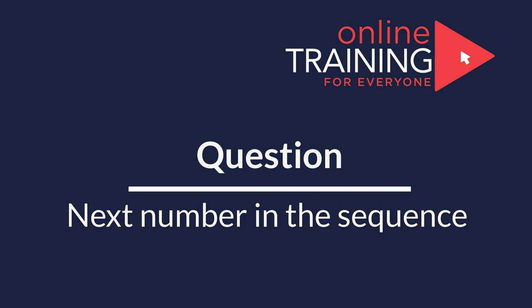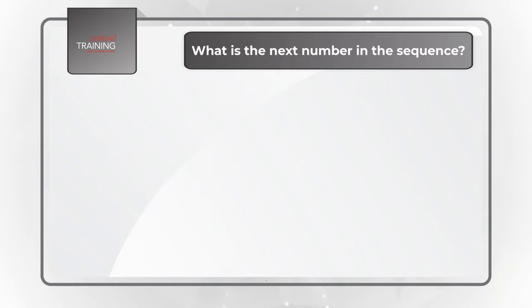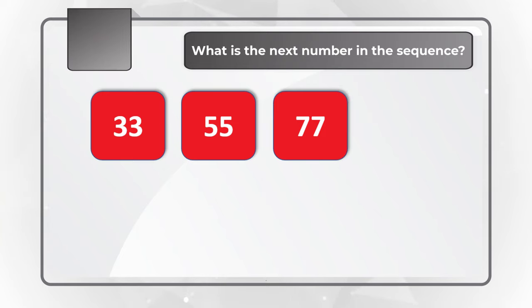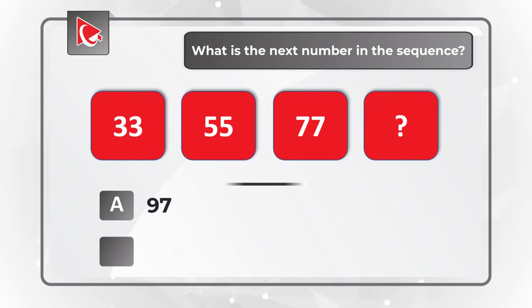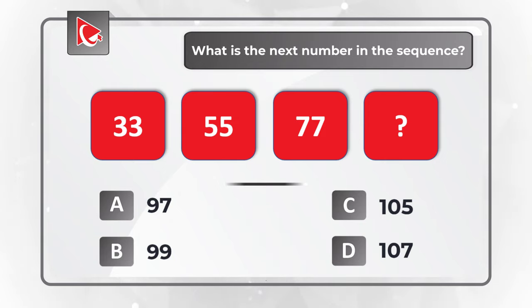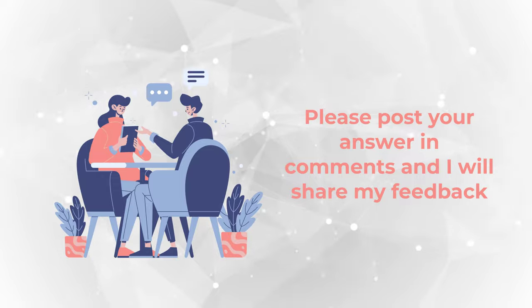Would you like to try your own skills? This is your opportunity to find the next number in the sequence. You are presented with three numbers: 33, 55, 77, and one number is missing. You have four choices: A: 97, B: 99, C: 105, D: 107. Give yourself a little time, and once you're ready, make sure to post your answer in comments. Thanks for participating and good luck!